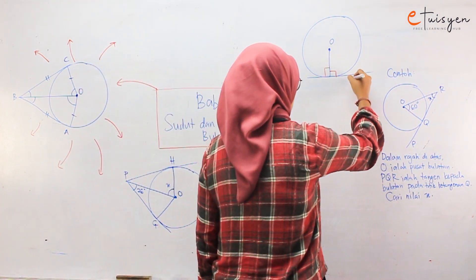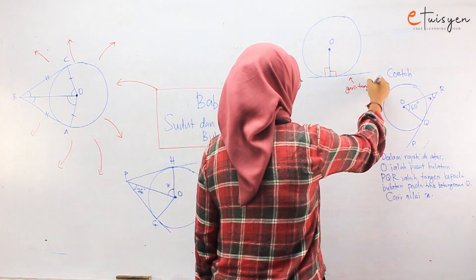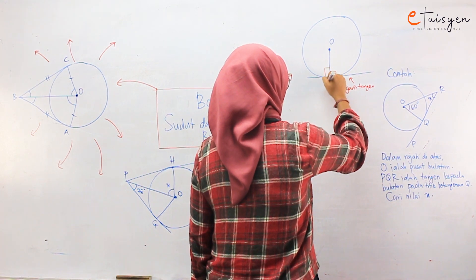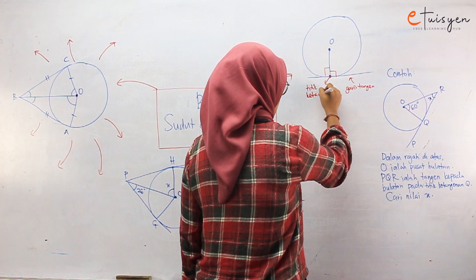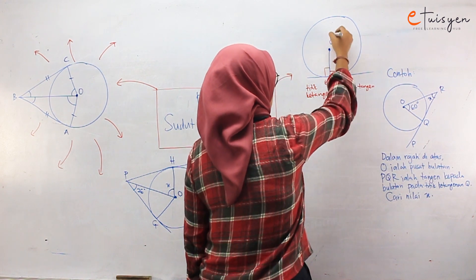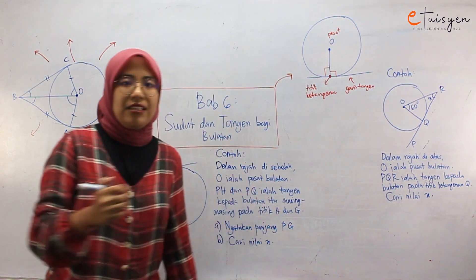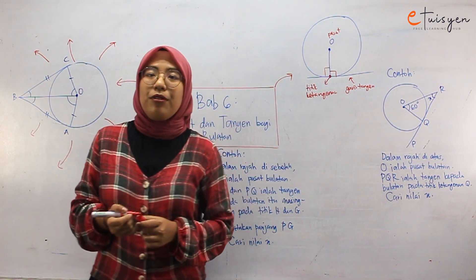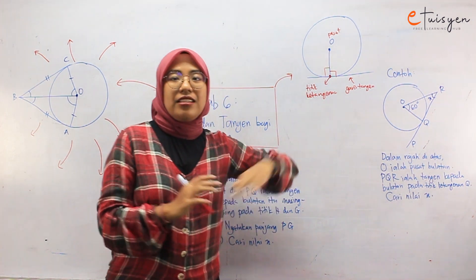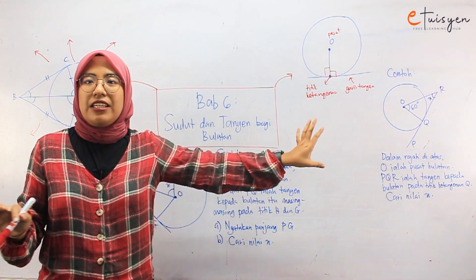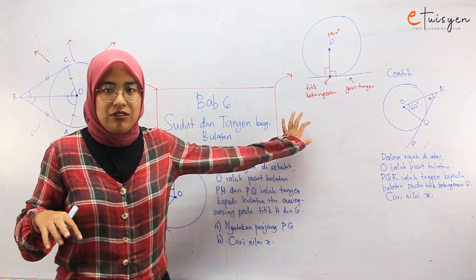So this one is garis tangent lah. Dan ini kita panggil sebagai titik ketangenan. Yang ni kita tahu adalah pusat — dia mesti kena pusat eh guys. So 90 darjah. So semua orang kena ingat ciri-ciri ni. So nanti bila kita buat latihan korang akan terus macam okay, kita kena guna konsep ni.